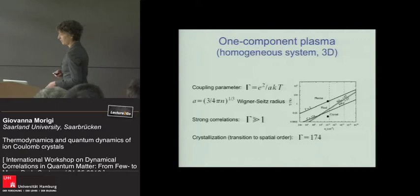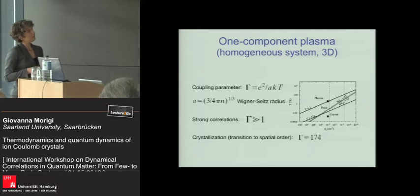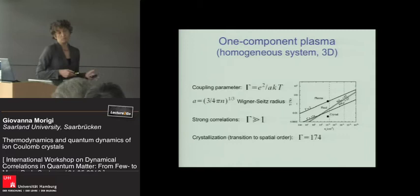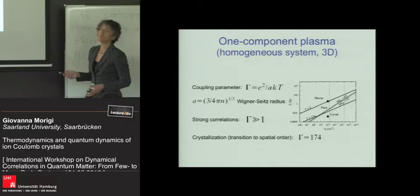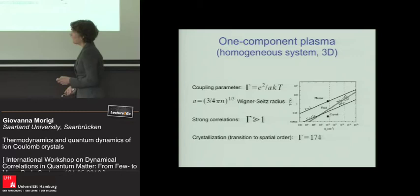What you see here is a plot from a review of Modern Physics by Daniel Dubin and Thomas O'Neill. This is a phase diagram with temperature on one axis and density on the other. You see a series of lines giving the different phases you can achieve. In three dimensions, with periodic boundary conditions assuming a homogeneous system, one has a transition from a fluid to a crystal at gamma equal to 174. I will focus on this regime.